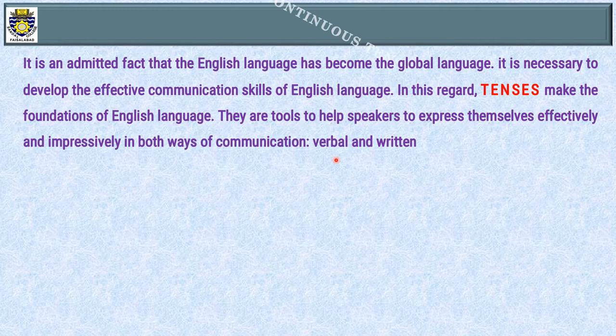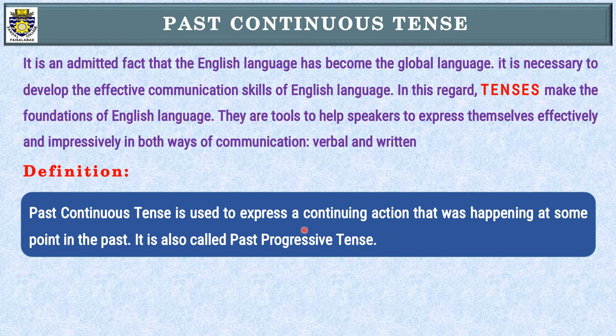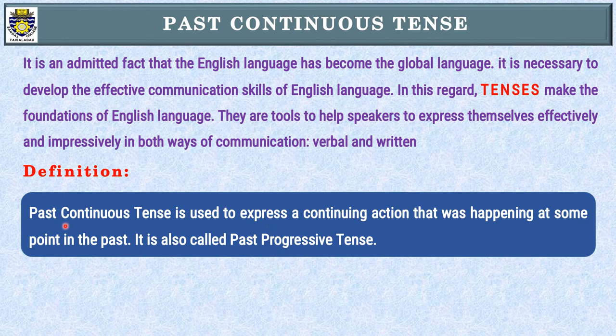Today's topic is Past Continuous Tense. Let's start with its definition. Past Continuous Tense is used to express a continuing action — ایک جاری action کو جو جاری حالت میں ہو، اسے بیان کرنے کے لیے استعمال کیا جاتا ہے۔ The important point in Past Continuous Tense is that the action was happening at some point in the past — جو ماضی میں کسی وقت، کسی موقعے پر جاری حالت میں تھا — ایسے action کو بیان کرنے کے لیے ہم Past Continuous Tense use کرتے ہیں۔